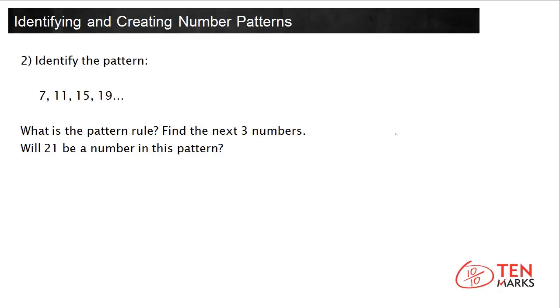11 is 4 more than 7. 15 is 4 more than 11. So the pattern looks like this. 7 plus 4 is 11. 11 plus 4 is 15. 15 plus 4 is 19. Each term is 4 more than the last. So this is a pattern of adding 4. Or, the rule for this pattern is to add 4 to each number.